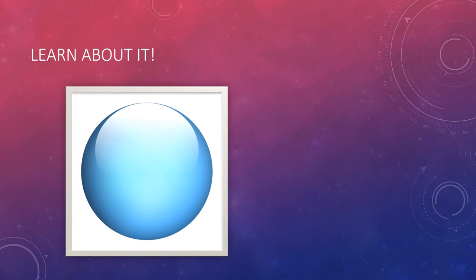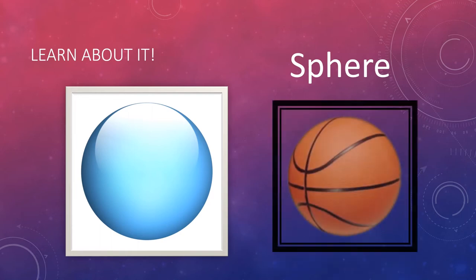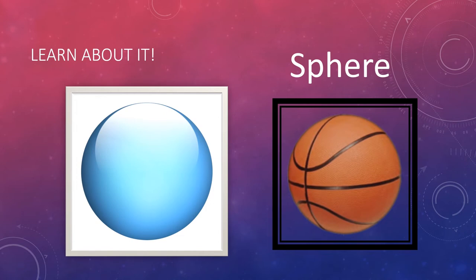And the last shape we'll take a look at is this. Do you know what this is called? You're probably thinking ball. The technical name is a sphere. And the example that I used is this basketball. Can you think of anything else shaped like a sphere?